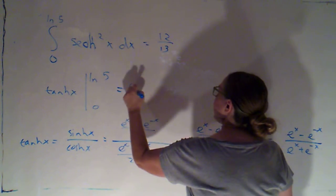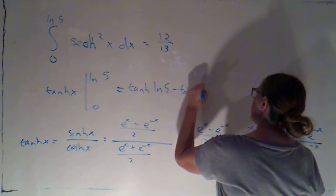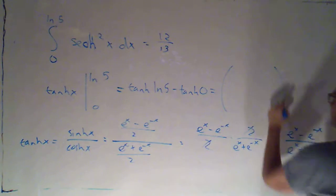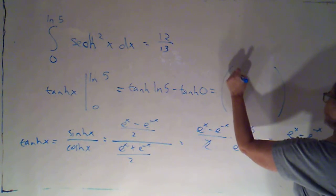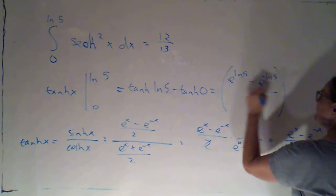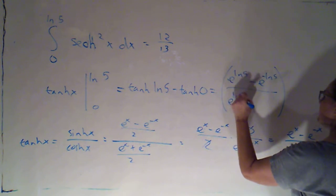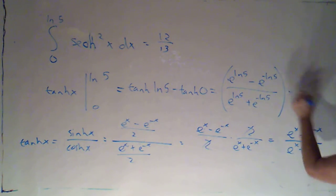So when I get tanh of the natural log of 5 minus tanh of 0, I know that tanh of the natural log of 5 is e to the ln 5 minus e to the negative natural log of 5 over e to the natural log of 5 plus e to the negative natural log of 5.